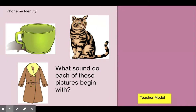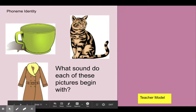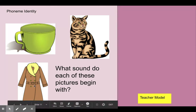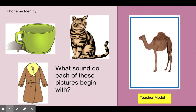Let's start with this one together. We have cup, cat, coat. Cup, cat, coat. What sound do each of these pictures begin with? The k sound. Cup, cat, coat. Okay, moving on to the next slide.